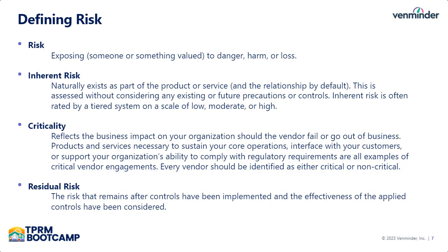When we talk about risk, let's define what we're talking about. Risk is basically exposing someone or something valued to danger, harm, or loss. The truth is that all vendor relationships have at least some risk. That risk is known as inherent risk, and it's the inherent risk that occurs within that product or service naturally. A quick example would be any vendor that requires the use of sensitive data to deliver their product or service — there is always a risk that that data could be compromised. When we're talking about inherent risk, we're always thinking about that base risk or raw risk, not thinking about all the things we can do to control or reduce that risk. We measure or rate the risk usually on a scale of low, moderate, or high.